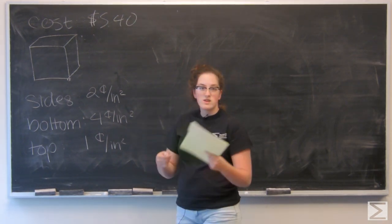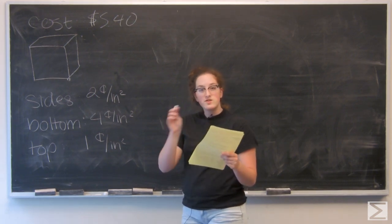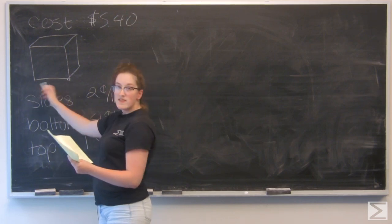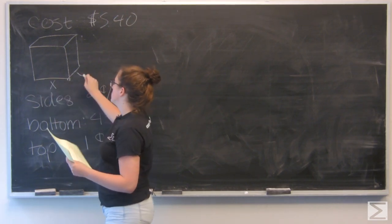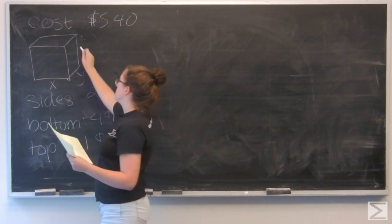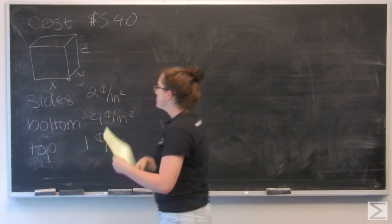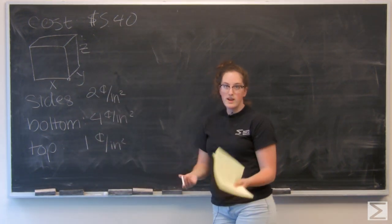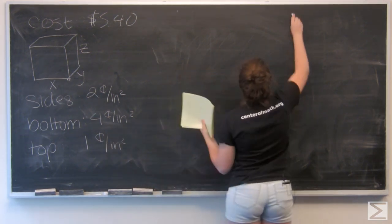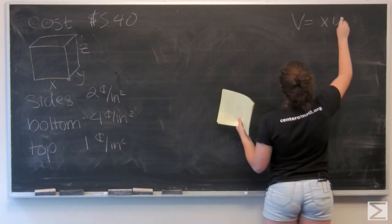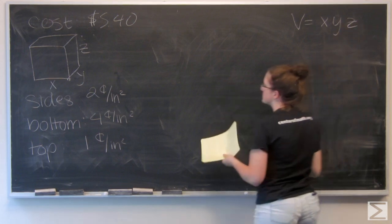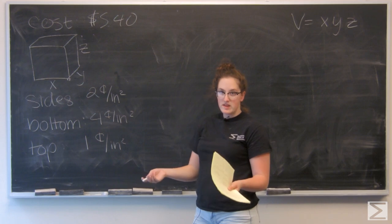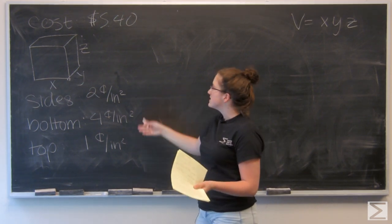Let's start by writing out an equation in terms of the dimensions of the box for the cost. I'm going to call the width x, the length y, and the height z. We can also write an equation for volume — that's just x times y times z. Cost is going to be a little more complicated; we want it to equal $5.40, and I'm going to put everything in terms of cents.